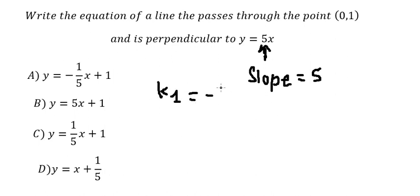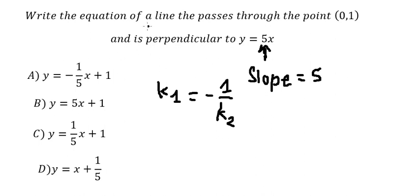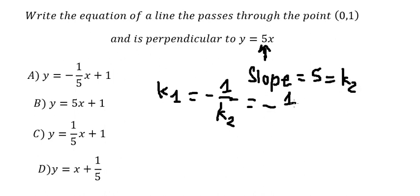The formula is k number one equals to negative one over k number two. Because this is perpendicular, we have k number one equals to negative one over k number two. So k number two is about number five, which gives us the slope of the line as negative one over five.